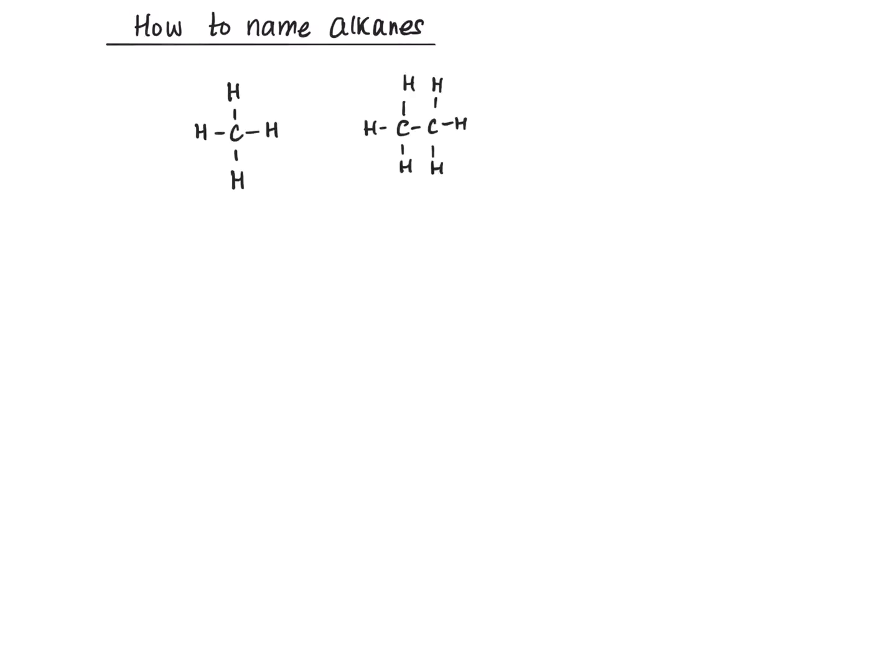How to name alkanes. Here are two alkanes. Alkanes are hydrocarbons in that they contain only the elements of carbon and hydrogen. This one is methane and this one is ethane.